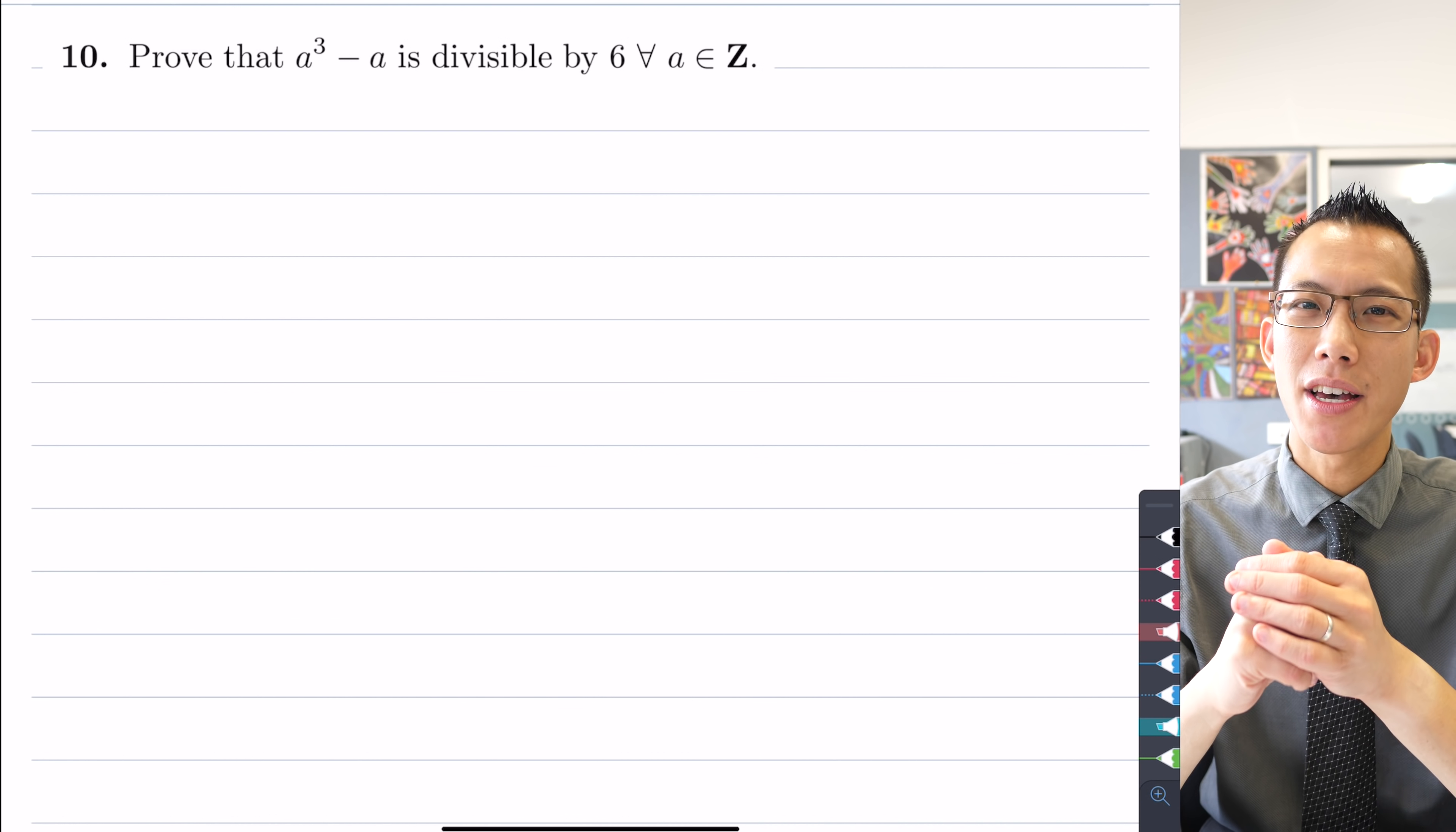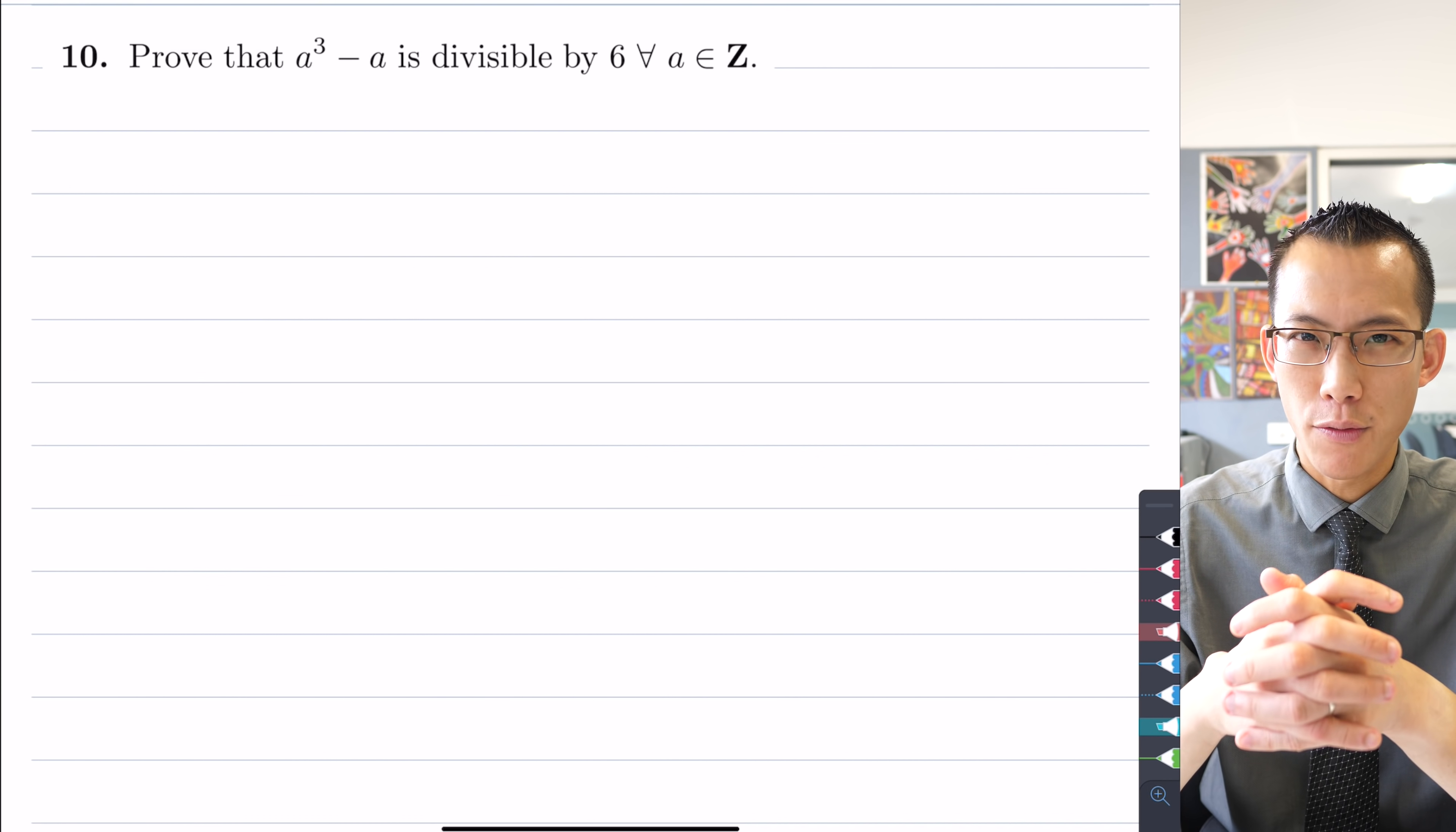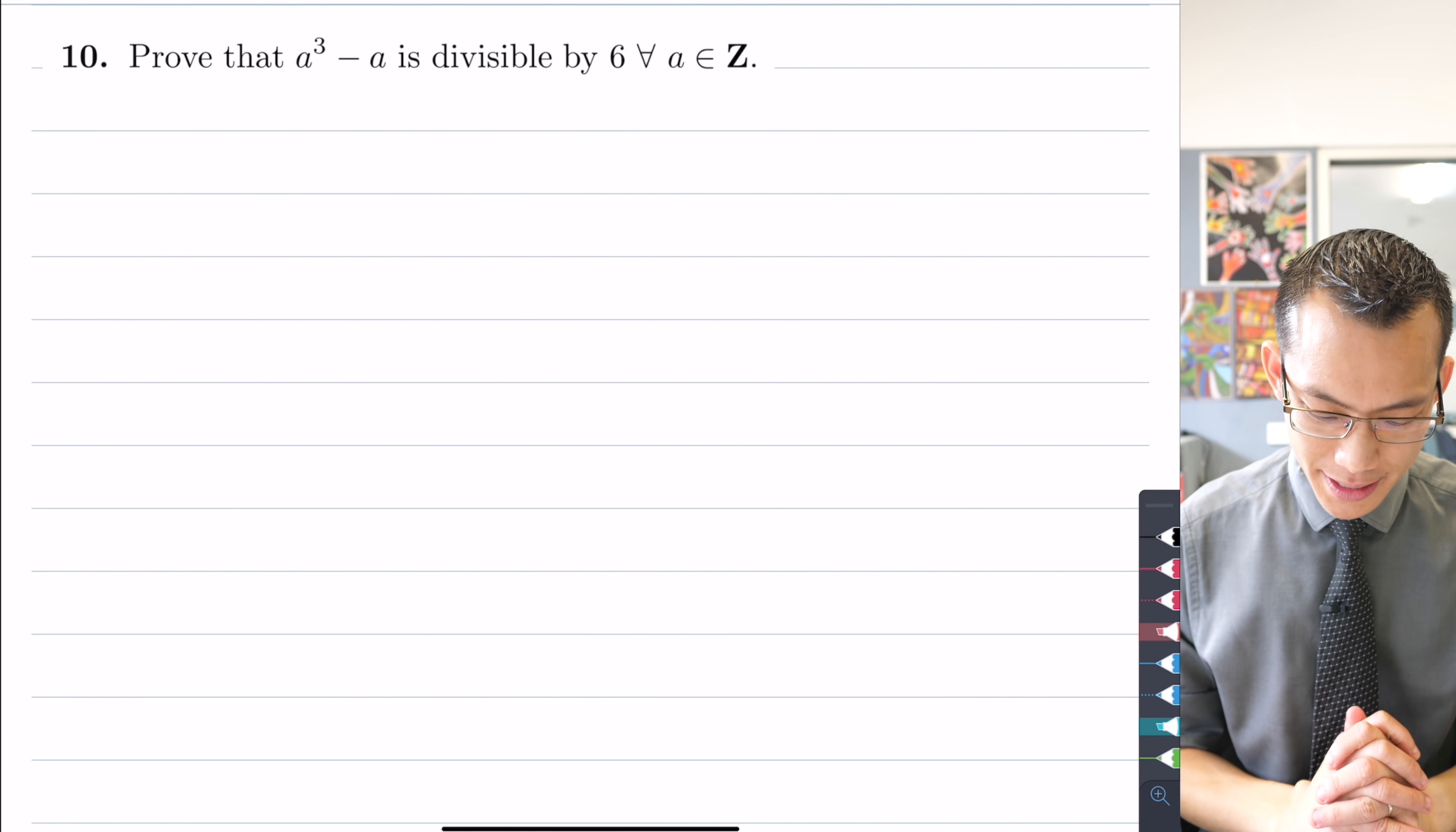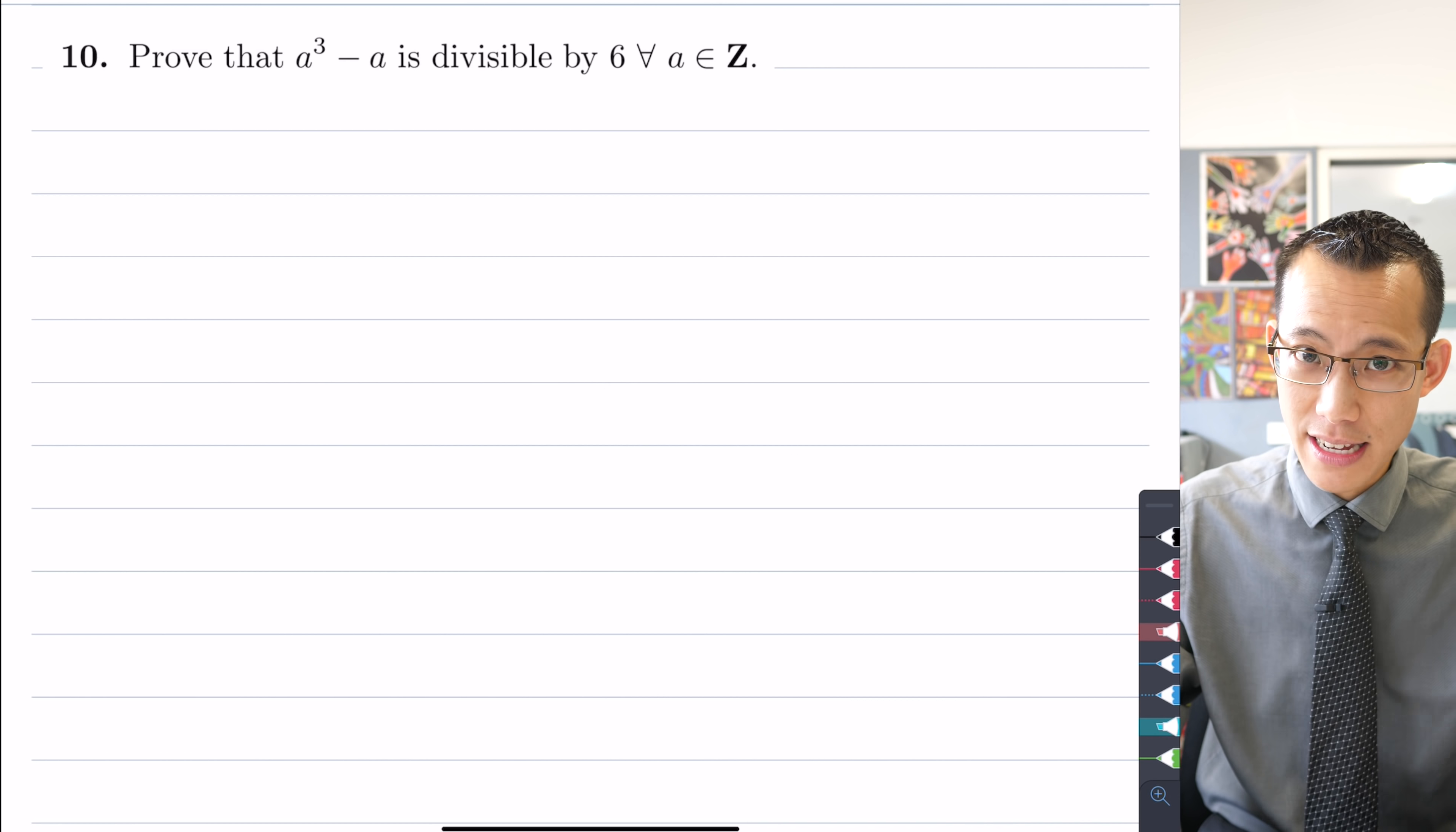We're going to have a look at this question that comes under the nature of proof. So read it with me and let's think about a couple of approaches we could use to prove this result. Prove that a³ - a is divisible by 6 for all values of a such that a is an integer.